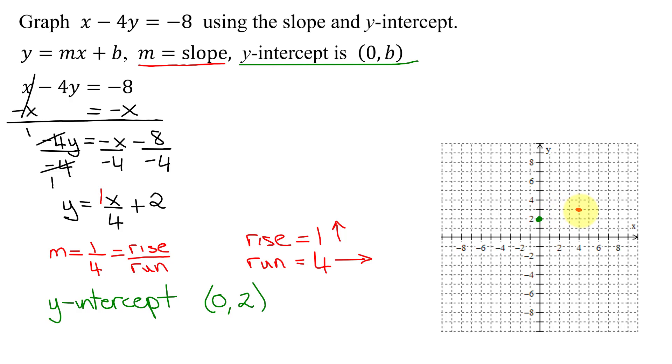If you want another checkpoint, you just repeat, up 1, and 1, 2, 3, 4 to the right.